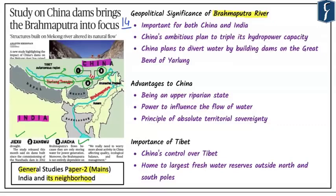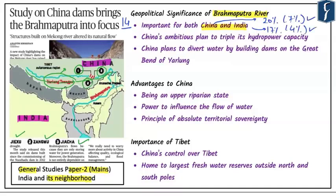Coming back to the geopolitical significance of the Brahmaputra, this river is important for both India and China. China supports around 20 percent of the world population while India supports around 17 percent. China has around 7 percent of global fresh water, while India has around 4 percent of fresh water reserves globally.